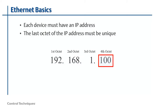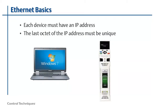A simple example would be a network that consists of a PC and a single Unidrive M700. The address of the drive is set to 192.168.1.100, and the address of the PC is set to 192.168.1.10. Valid choices for the last octet of the address are any number other than 0 or 255. Now let's have a look at how to configure an IP address in the drive.